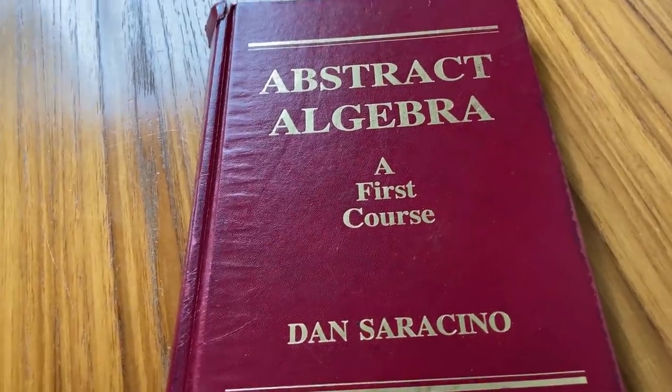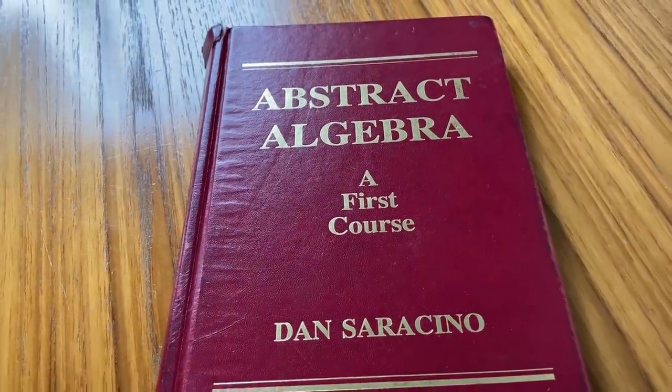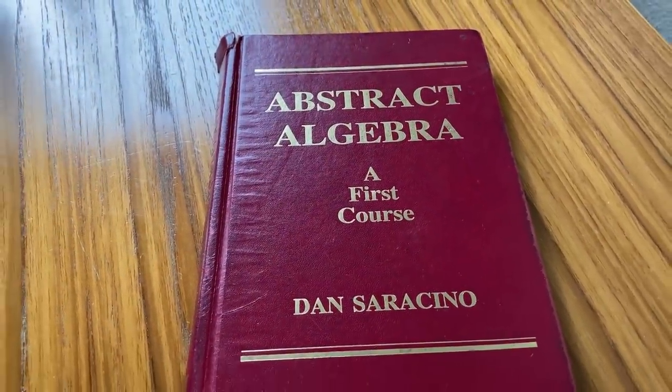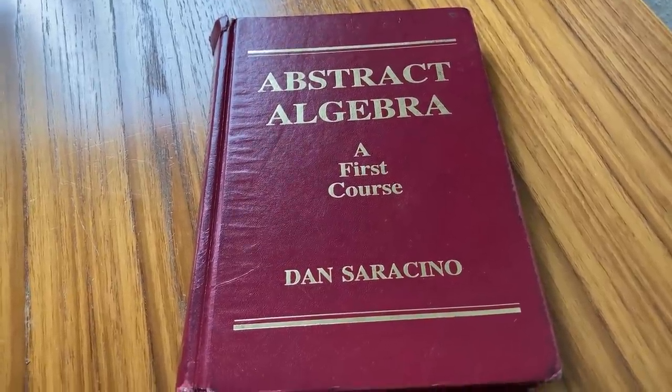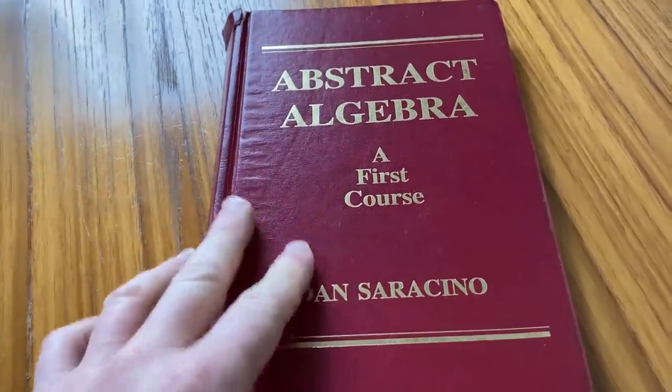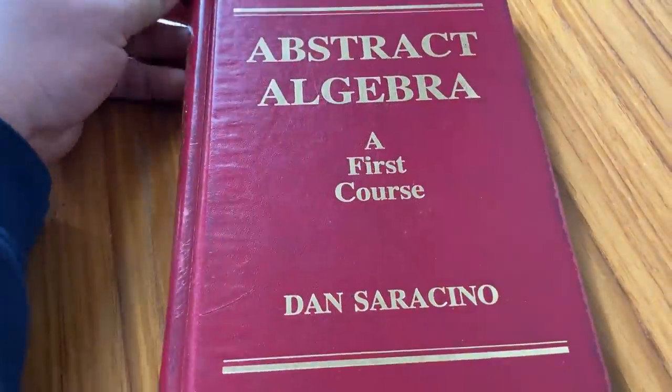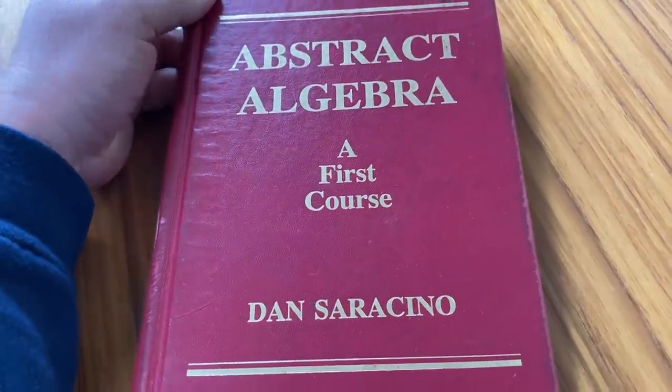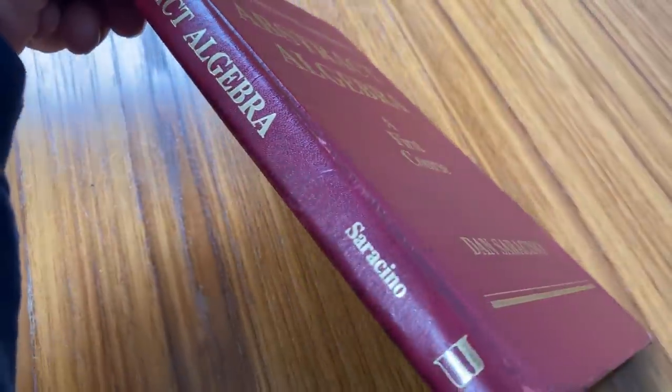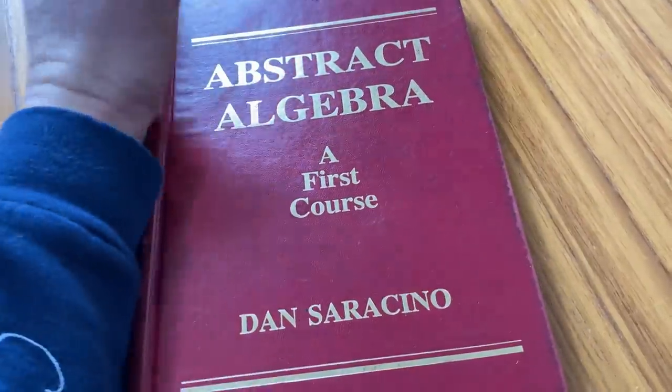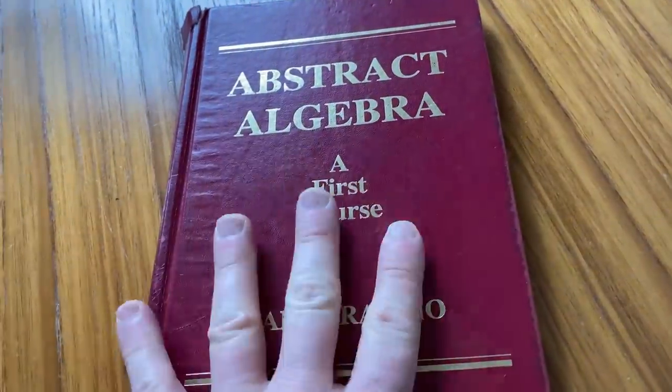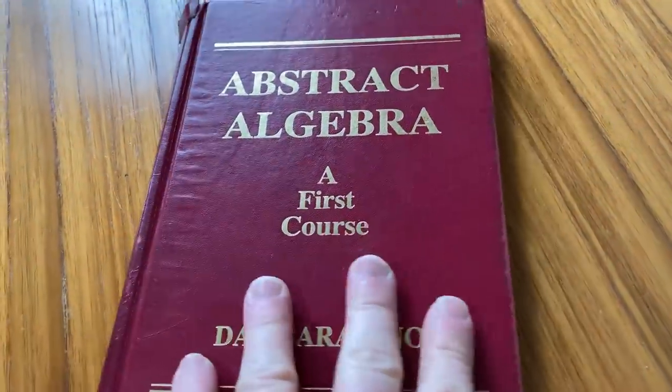This last book is really special to me because, despite the fact that I have tons of books, this is one of the few books that I've actually read in its entirety. I've probably done 90% of the problems in this book. This is Abstract Algebra, A First Course by Dan Saracino. And I love this book. This is the book that taught me abstract algebra. And I've read pretty much the whole thing, and I've done most of the problems. Let's take a look inside this book.